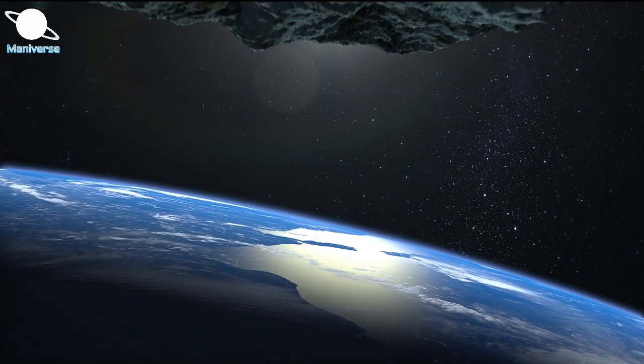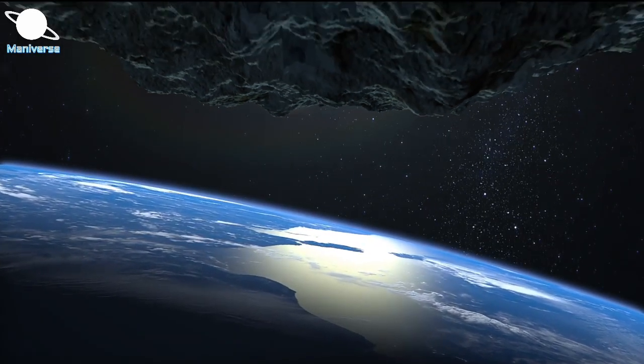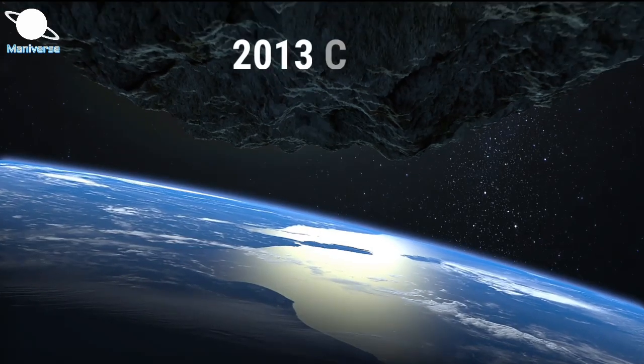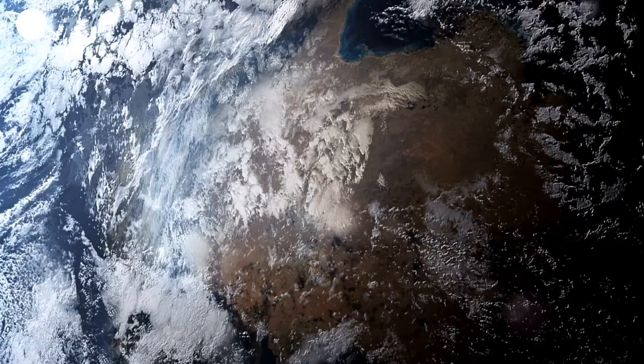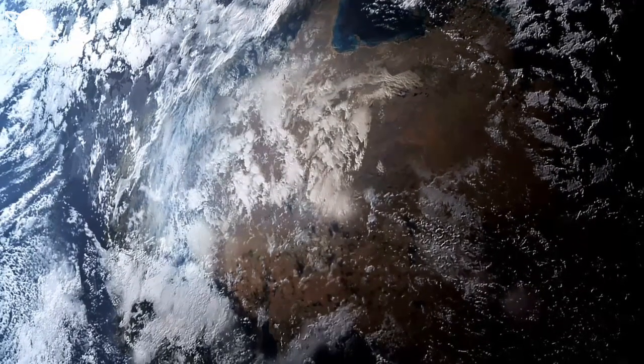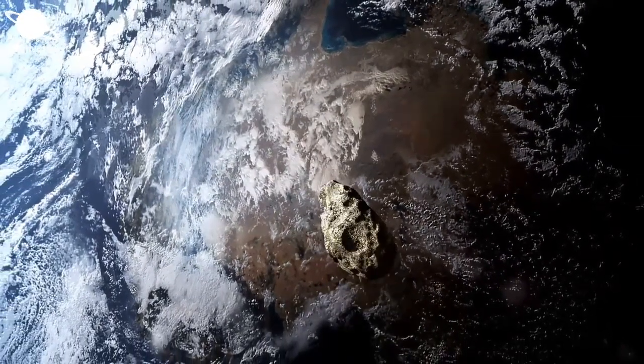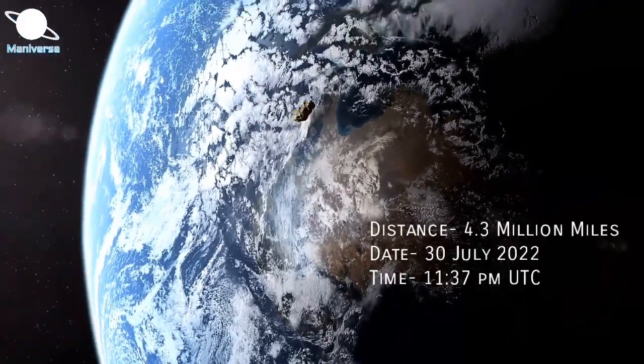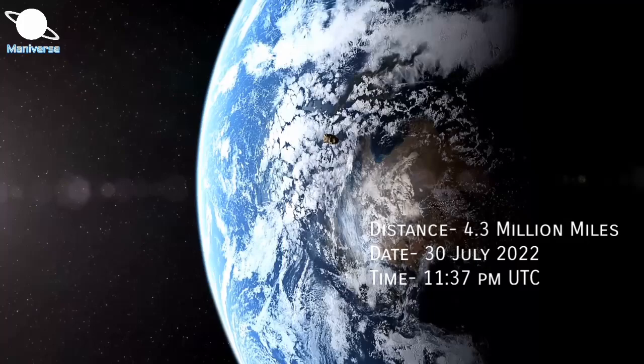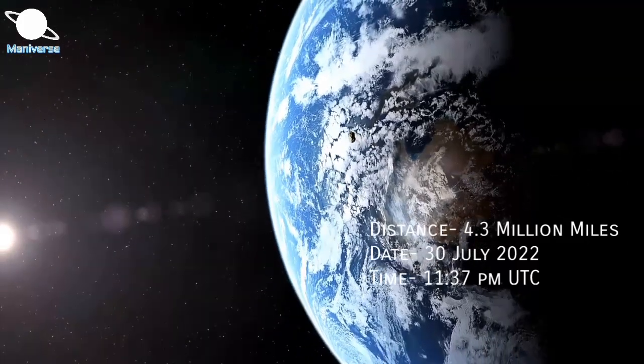The second of the two large asteroids to pass the Earth next week is called 2013 CO-83, and this object is expected to make its closest approach one day later. On 30 July 2022, the asteroid 2013 CO-83 will come close within around 4.3 million miles from our Earth at 11.37 pm UTC.